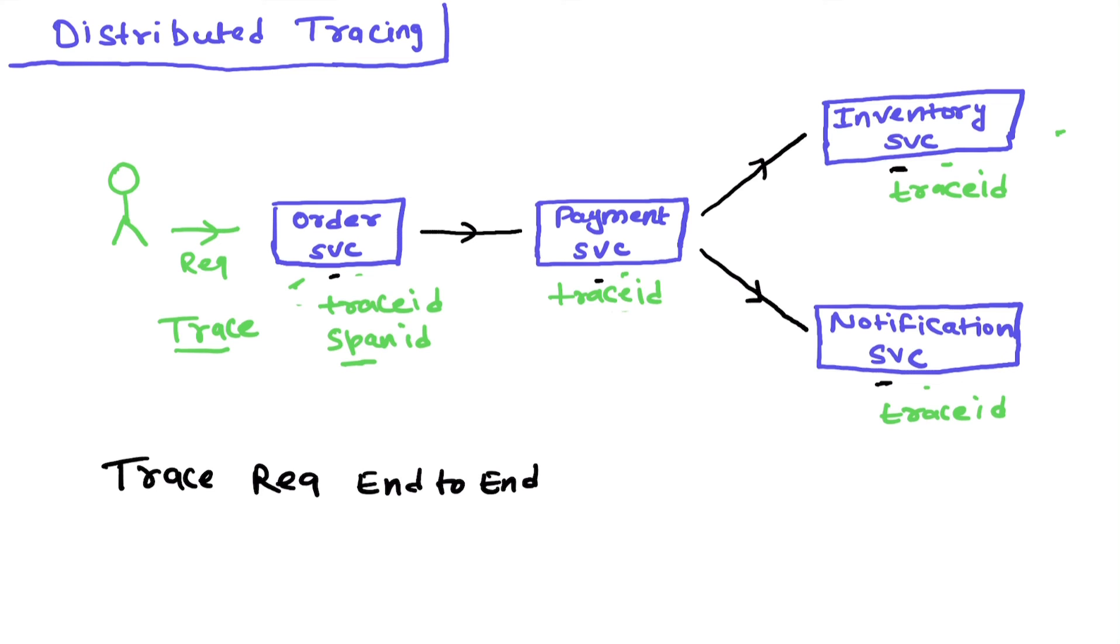This span ID will be span ID one, this span ID in the payment service will be span ID two, in the inventory service it will be span ID three, and in the notification service it will be span ID four. Any ID unique to that particular module is the span ID, and the ID unique to the whole journey is the trace ID. So trace ID will remain same in the whole journey. Let's say trace ID is 123—it will be 123 in the payment service, 123 in the inventory service, and 123 in the notification service. But span IDs will be different: span ID one, span ID two, three, and four.